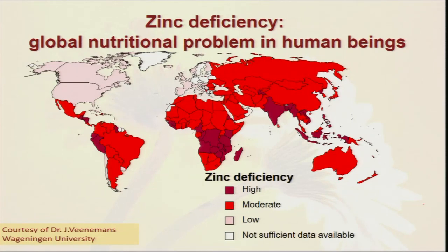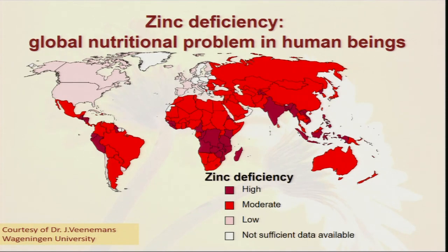Even globally, zinc deficiency was not so common previously, but nowadays zinc deficiency in the human population has spread throughout the world. This is because we are mostly depending on plant products for these nutrients, and we are growing crops after crops with very little supply of organic manure or organic compost in the field. Soils become deficient in micronutrients, especially zinc, and most plants take zinc from the soil. So if the soil is deficient in zinc, ultimately the produce we consume will also be deficient in zinc, and our health will be jeopardized.